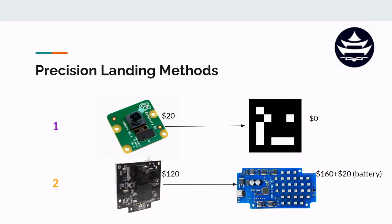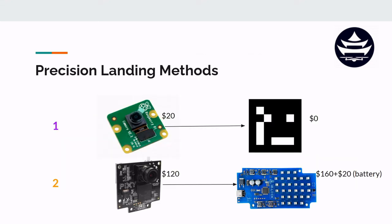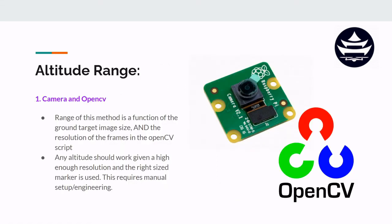The price points of both methods are very different, so let's look at what that means for performance. The altitude range for the OpenCV camera method depends on how you build it — it's a function of the ground target image size and the image resolution you're running your OpenCV scripts with. The higher the resolution, the higher the altitude from which you can perform precision landing. Any altitude should work given a high enough resolution and the right size marker, but this does require manual setup and engineering, so it doesn't work just out of the box.